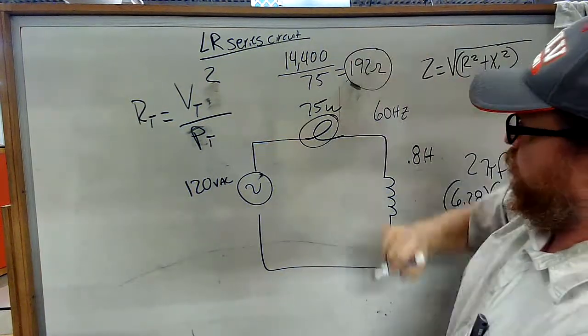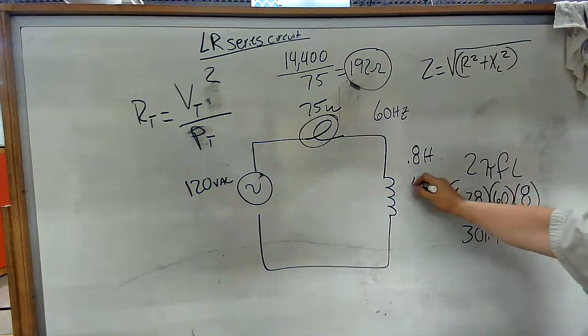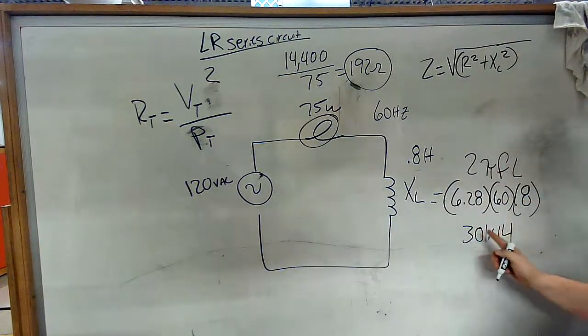Gives you 192 ohms. Then I'm looking for my XL here. That equals 2πFL, so it's 6.28 times 60 times 0.8.